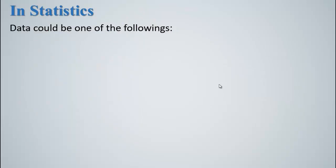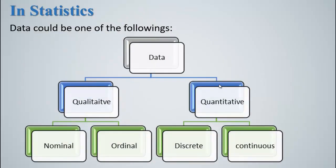In statistics, data could be one of the followings. It could be qualitative or quantitative. The qualitative type of data could be either nominal or ordinal. However, quantitative type of data could be discrete or continuous.